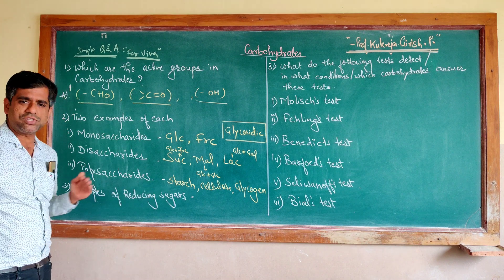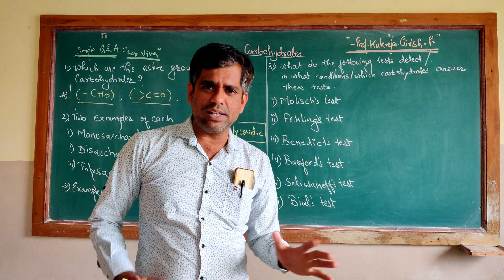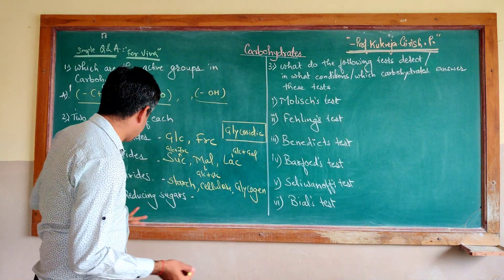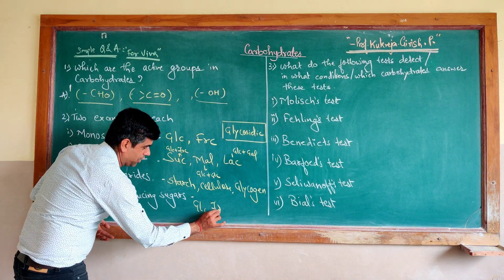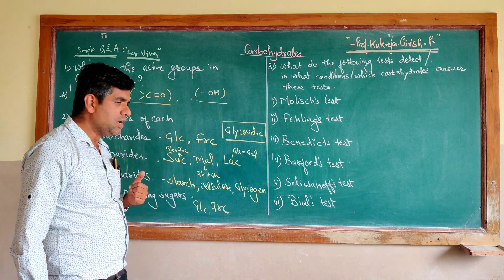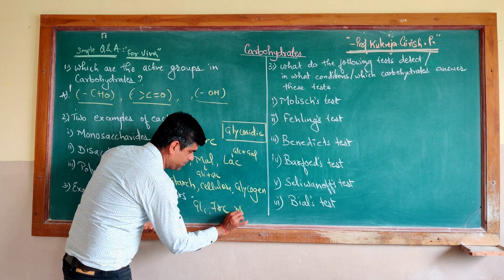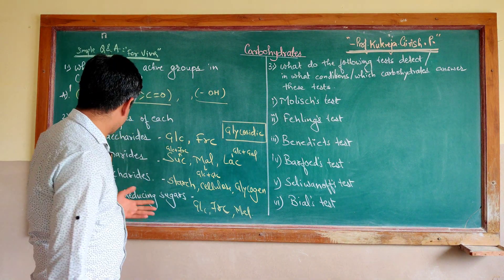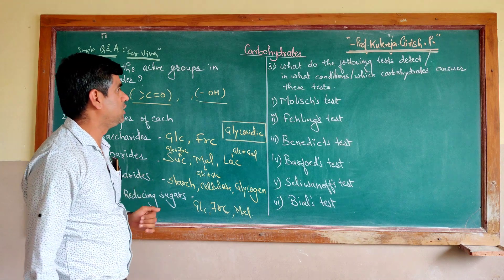Give some examples of reducing sugar. A simple trick is that all monosaccharides are reducing, so you can name any monosaccharide — glucose, fructose — and it will be reducing. Among disaccharides, maltose is an example of a reducing sugar. These are some of the examples of reducing sugars.